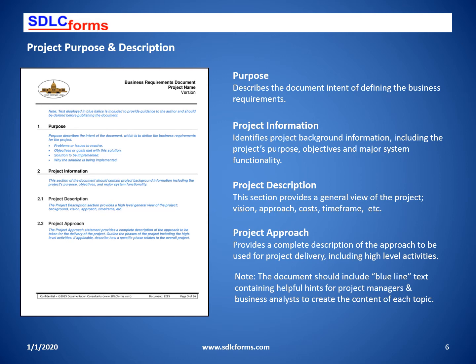The project information will include major system functionality. The project description entails the vision or high-level overview of the project — how will it work from the business's viewpoint: desktop, mobile, etc. What is the allocated budget for the project and a development timeline that may be critical for a go-no-go decision?